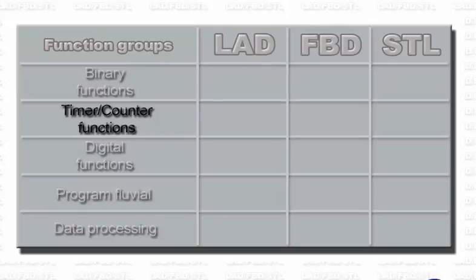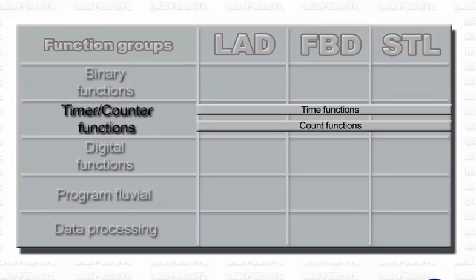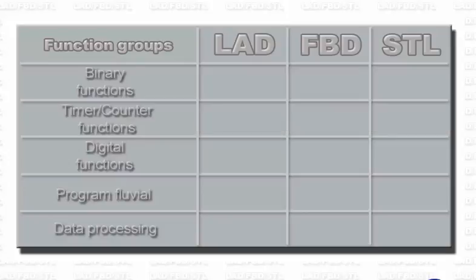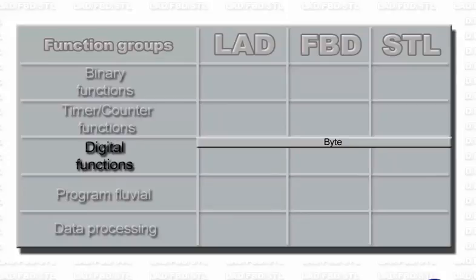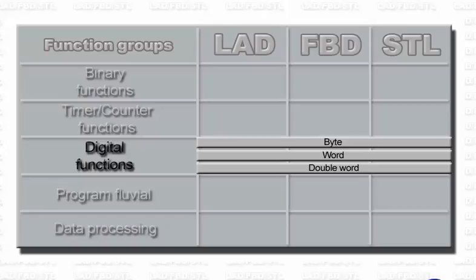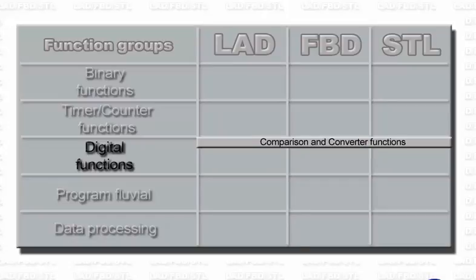Powerful timer and counter functions allow you to solve quickly and reliably the extremely frequent timing and counting tasks. These operations are executed directly in the CPU without any additional hardware. In the group of digital functions, variables with digital values and the information sizes byte, word, or double word are processed. The functions available are comparison, conversion, and powerful arithmetical functions.